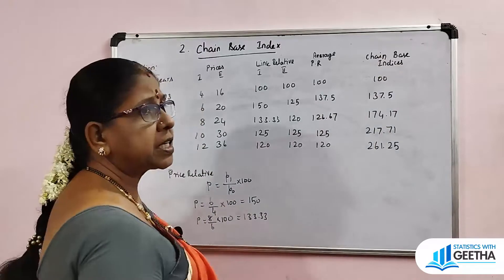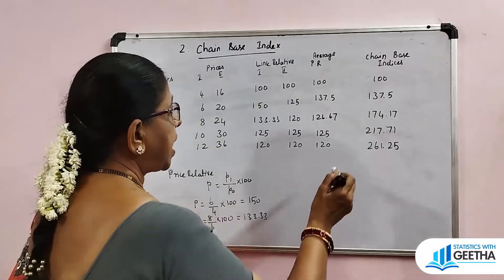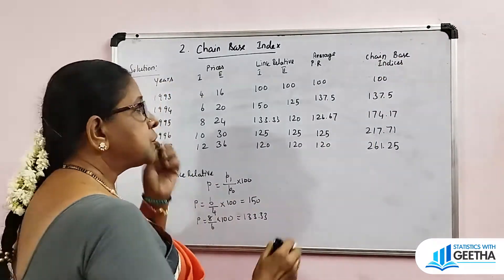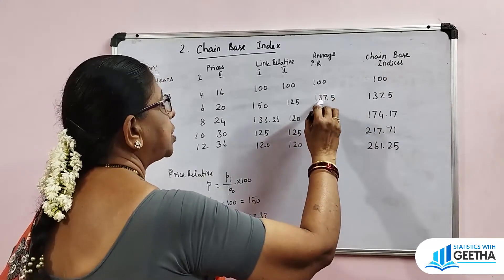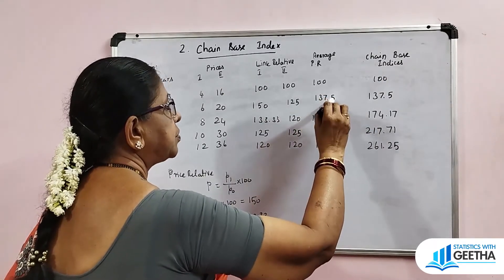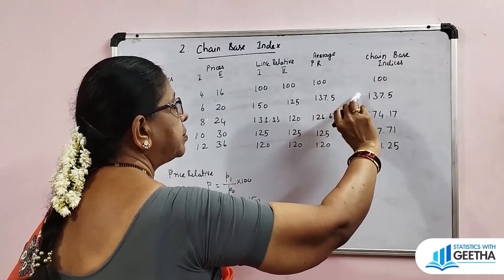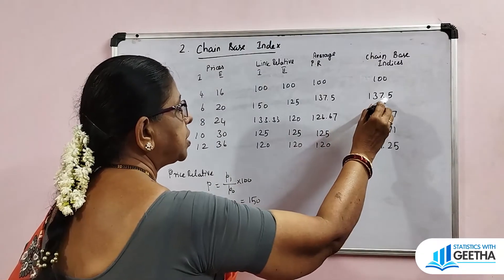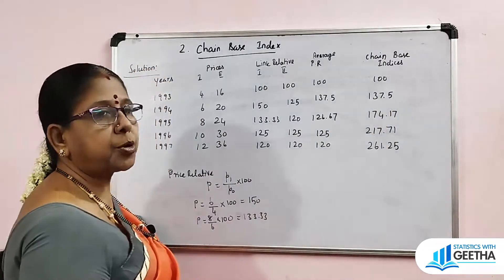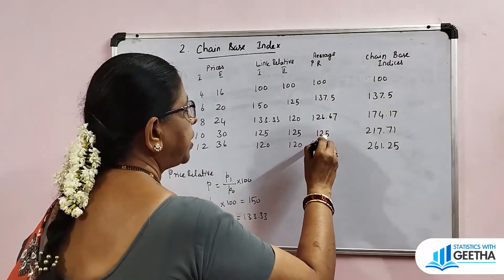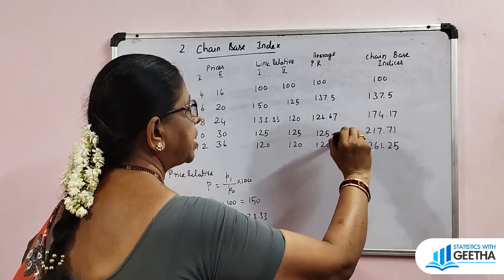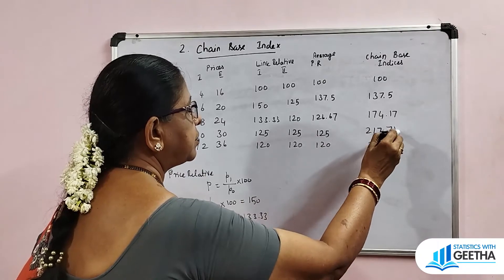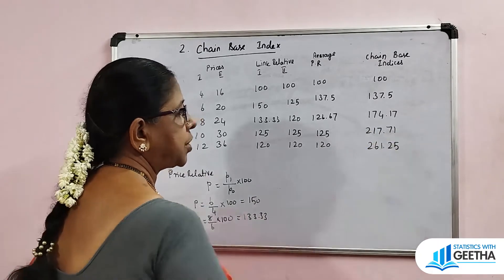Now we compute the chain-based index numbers using: current year average price relative into previous year chain-based index divided by 100. The first year is 100. The second year is 137.5 into 100 divided by 100, which is 137.5. The third year is 126.67 into 137.5 divided by 100, giving 174.17. The next is 125 into 174.17 divided by 100, giving 217.70. Finally, 120 into 217.71 divided by 100 gives 261.25.